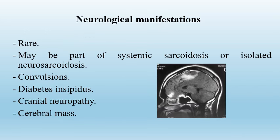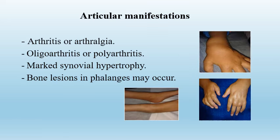Neurological manifestation is rare and may be part of systemic sarcoidosis or occur as isolated neurosarcoidosis. Clinical presentations are variable and may include convulsions, diabetes insipidus due to involvement of the pituitary gland, cranial neuropathy, and cerebral mass with signs and symptoms of increased intracranial tension. Articular manifestation includes polyarthritis or polyarthralgia, and oligoarthritis may occur, characterized by marked synovial hypertrophy.